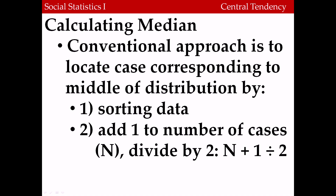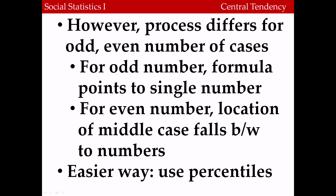How do we calculate the median? The conventional approach is to locate the case corresponding to the middle of the distribution by sorting the data from lowest to highest, adding one to the number of cases, and then dividing that value by two. This points to the value corresponding to the median category. The process differs depending on whether you have an odd or even number of cases. For an odd number, it points to a single number corresponding to the median. For an even number, it points to two cases and the median falls in between. However, there's an easier way using something called a percentile.